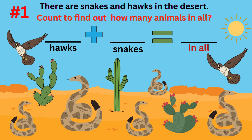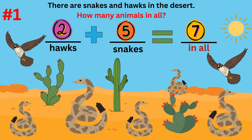Word problem number one. There are snakes and hawks in the desert. Count to find out how many animals in all. The answer to the question is there are seven animals in all. The addition sentence is two hawks plus five snakes equals seven animals in all.